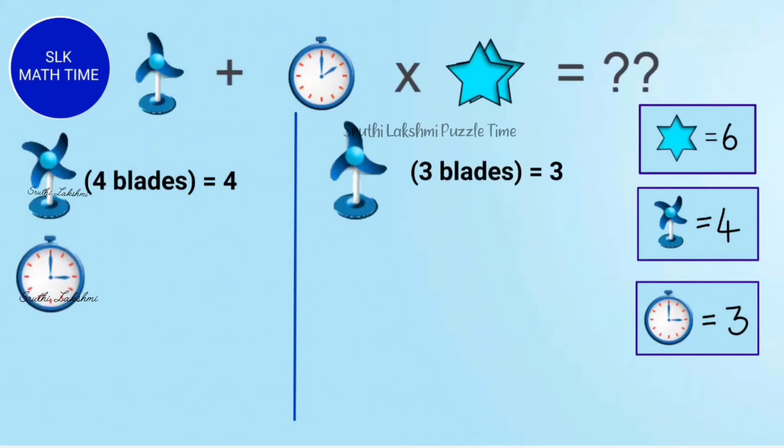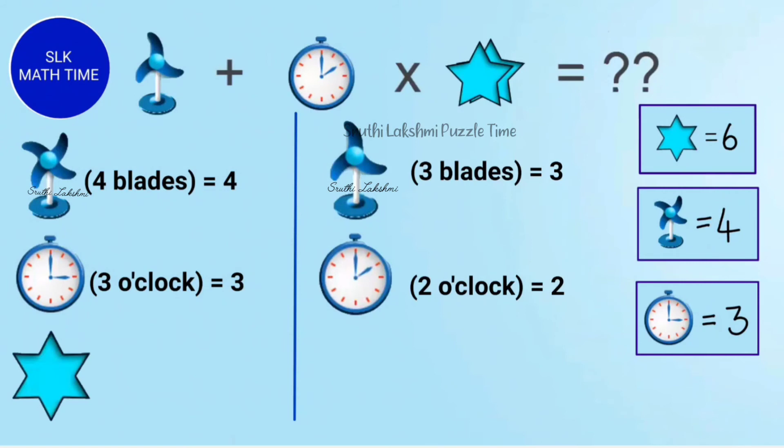On the clock, the last time we saw it, it showed 3 o'clock. And its value was also 3. This time, it shows 2 o'clock. So its value must be 2. Next, let's look at the star. This star has 6 sides, while this star has only 5 sides. So its value is 5.